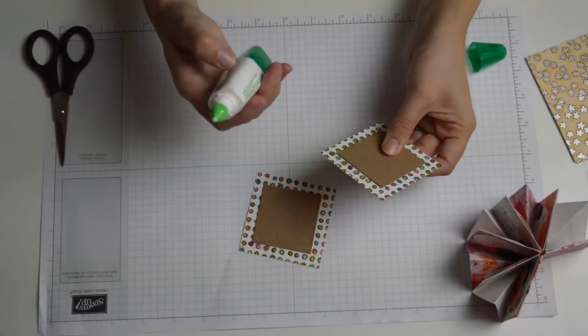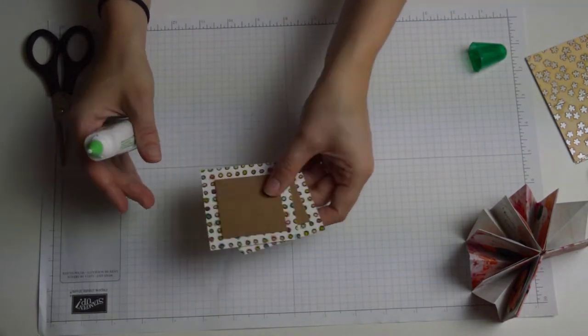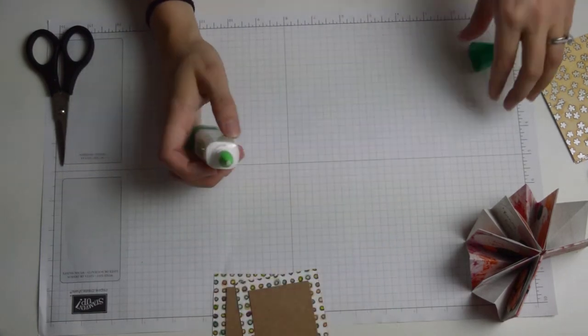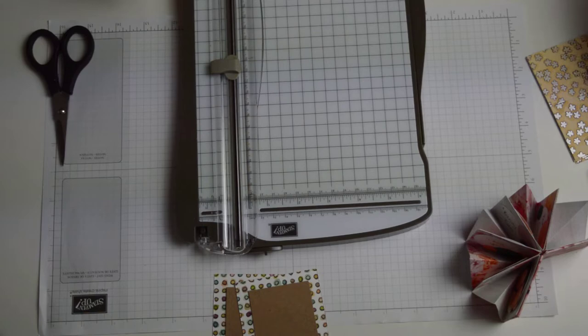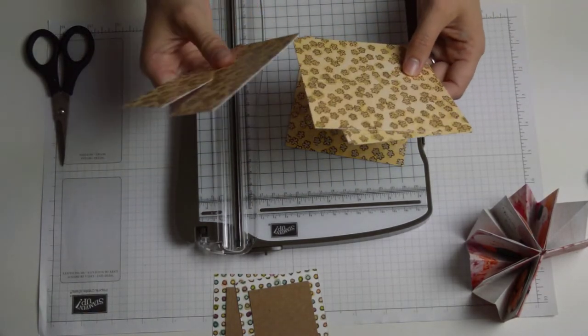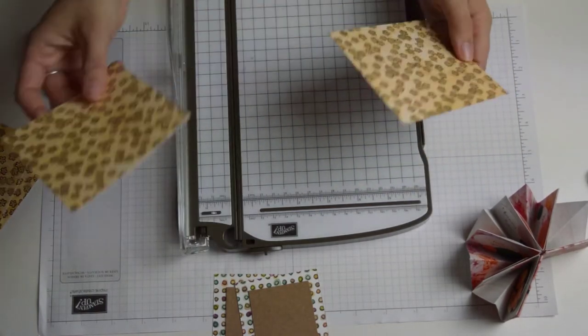This glue I'm using Tombow dries relatively quickly but if you're using a glue that takes a little bit longer you're going to want to make sure that bit is nice and stuck down before you proceed. I'm bringing our four by four, so I have done three of them just to save time but I'm saving two so I can show you what to do.